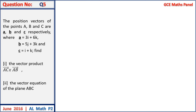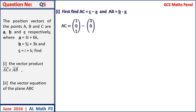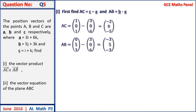Question 5: the position vectors of three points a, b, and c are given as vectors a, b, and c respectively. Find the vector product AC cross AB. First, we find AC equals c minus a and AB equals b minus a. Computing these vectors: AC equals (minus 2, 0, minus 5) and AB equals (minus 3, 5, minus 3). We then compute the cross product AC cross AB.